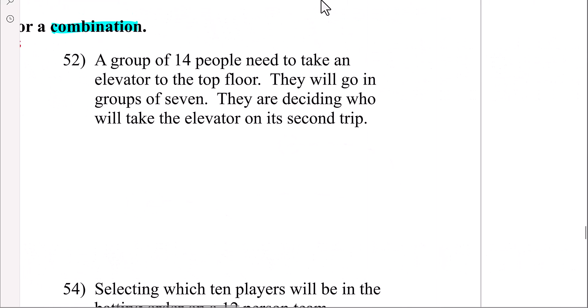Let's do this example. A group of 14 people need to take an elevator to the top floor. They will go in groups of seven. Doesn't really matter who, I mean unless there's some dire emergency, but in general it doesn't matter. If we just need groups of seven, order doesn't matter on this one. So this would be an example of a combination.